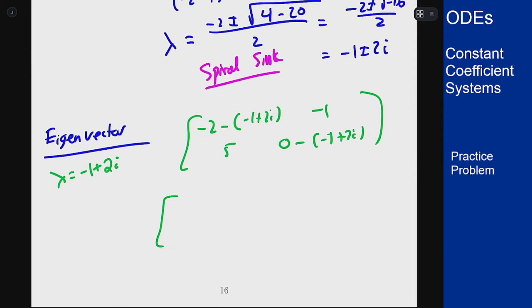Combine the numbers together. This is negative one minus two i negative one five and one minus two i. I can multiply the top row by minus one just to get rid of those minus signs. One plus two i one five and one minus two i.